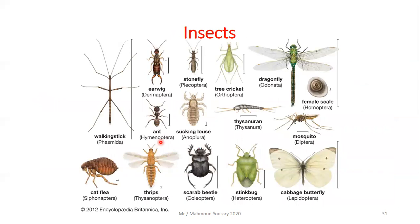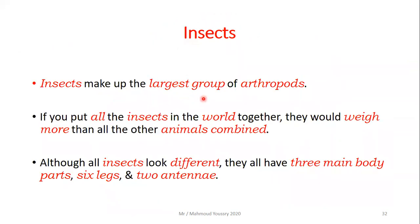The last type of arthropods is insects — butterflies, grasshoppers, dragonflies, mosquitoes, and many others. Insects make up the largest group of arthropods; if you put all insects in the world together, they would weigh more than all other animals combined. Although all insects look different, they all have three main body parts, six legs, and two antennae.